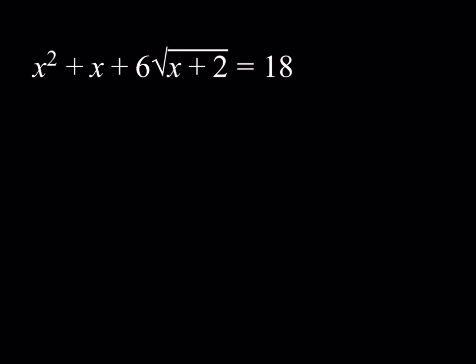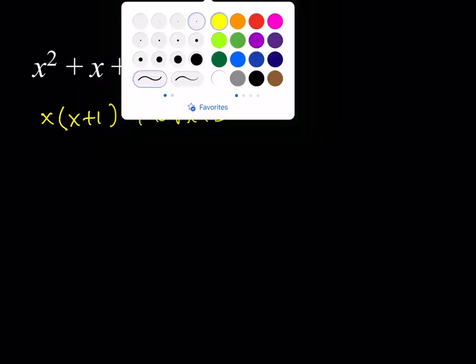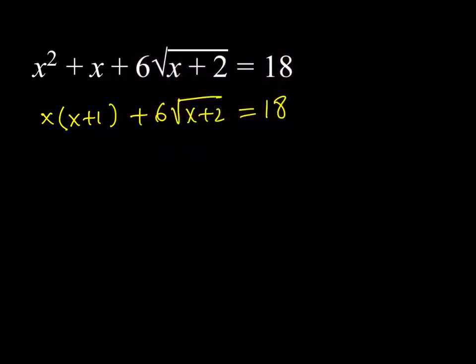So here's how it goes. I'd like to manipulate this equation a little bit first. So I'm going to go ahead and write this as x times x plus 1 plus 6 times the square root of x plus 2, and that's equal to 18. So what I'd like to do here at this point is I'd like to use substitution. So for that purpose, I'm going to call this u.